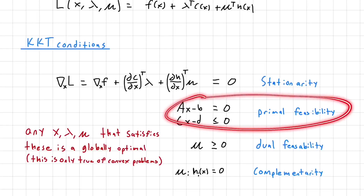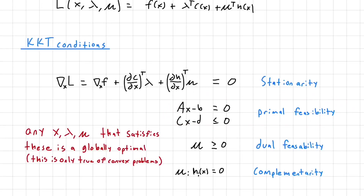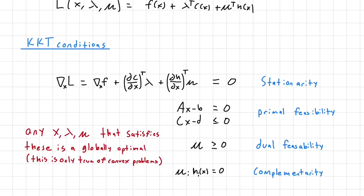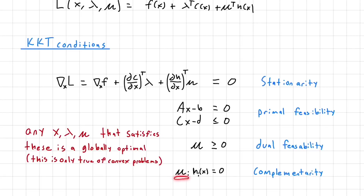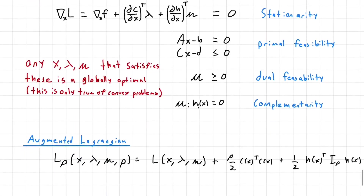The next set of conditions is primal feasibility — this just says the original constraints Ax = b and Cx ≤ d must actually be satisfied. Then we have dual feasibility, which says mu, the dual variable associated with our inequality constraints, must be positive. The last condition is complementarity: the element-wise product of mu with our inequality constraint function h must be zero. So if the constraint is active (h(x) = 0), the corresponding dual variable is something positive; if the constraint is inactive, mu is zero.